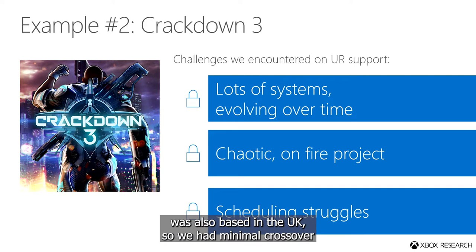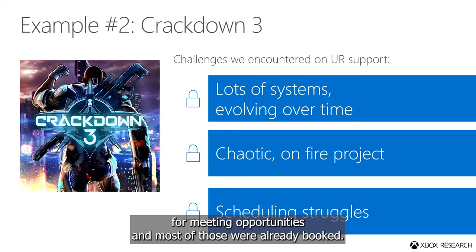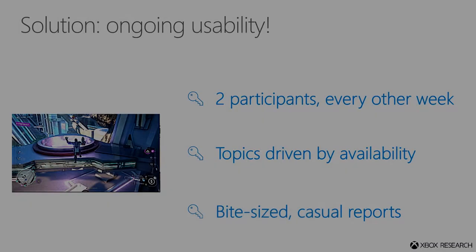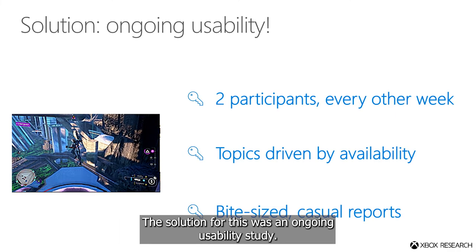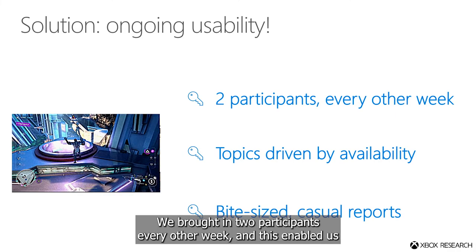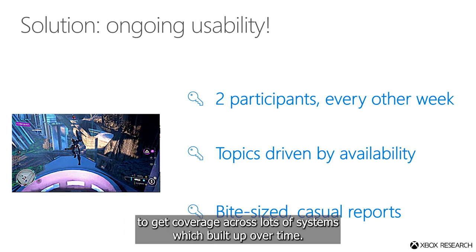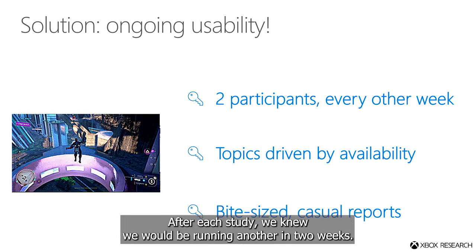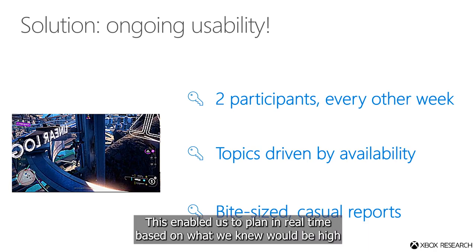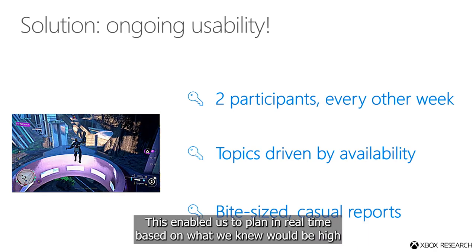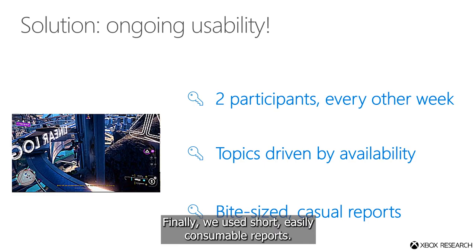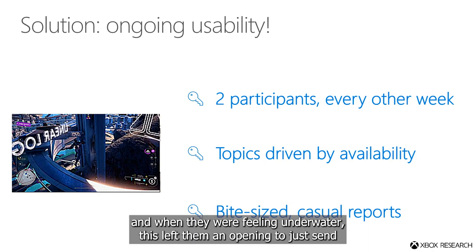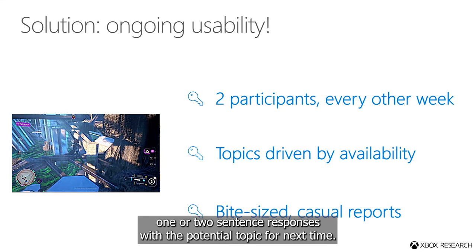The team was also based in the UK, so we had minimal crossover for meeting opportunities, and most of those were already booked. This made it a struggle just to schedule meetings to plan or debrief UR studies. The solution was an ongoing usability study. We brought in two participants every other week, which enabled us to get coverage across lots of systems that built up over time. The topics were driven by availability. After each study, we knew we'd be running another in two weeks, enabling us to plan in real time based on what we knew would be high-priority and ready. Finally, we used short, easily consumable reports. This lowered the threshold for the team to engage, and when they were feeling underwater, it left them an opening to just send one or two sentence responses with a potential topic for next time.